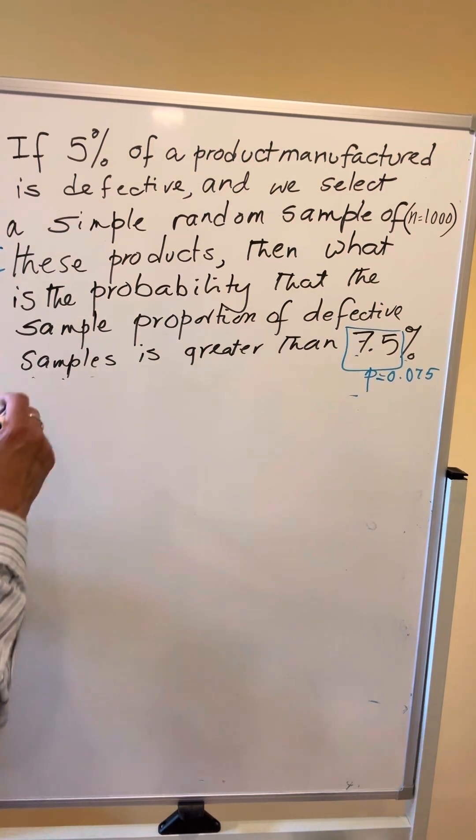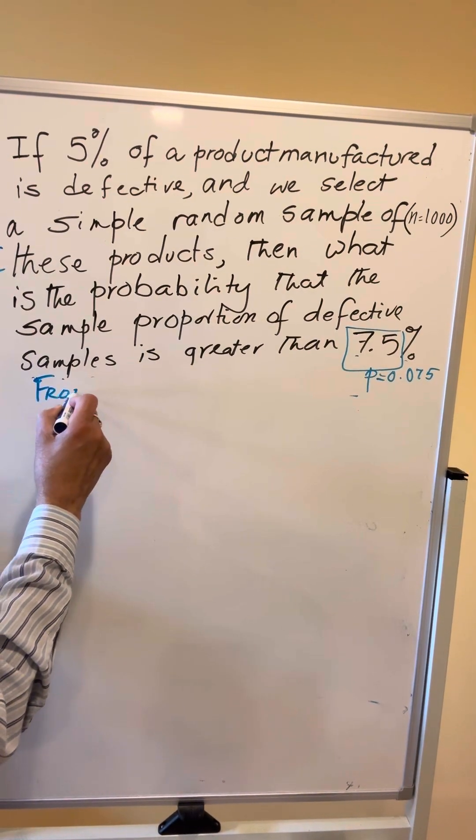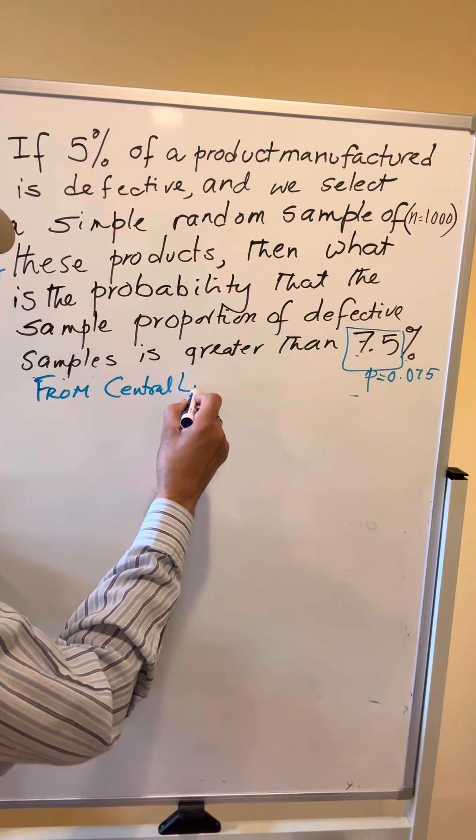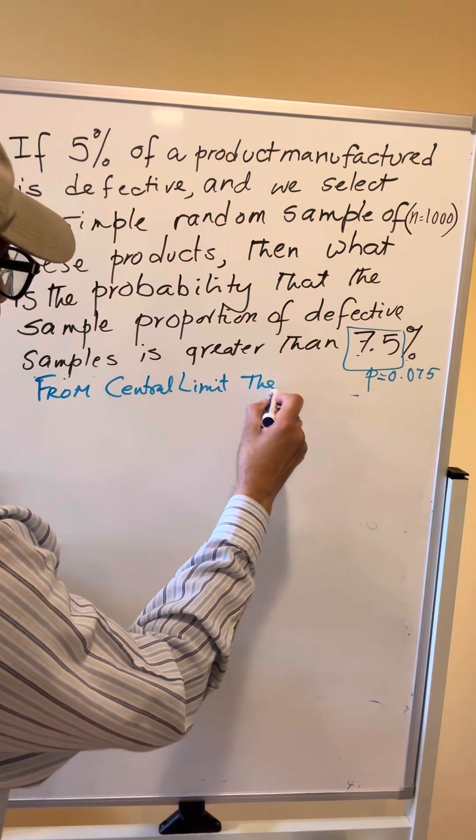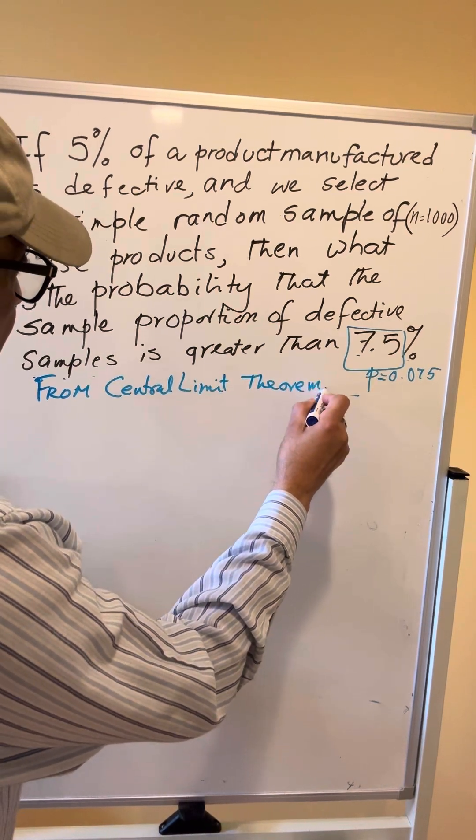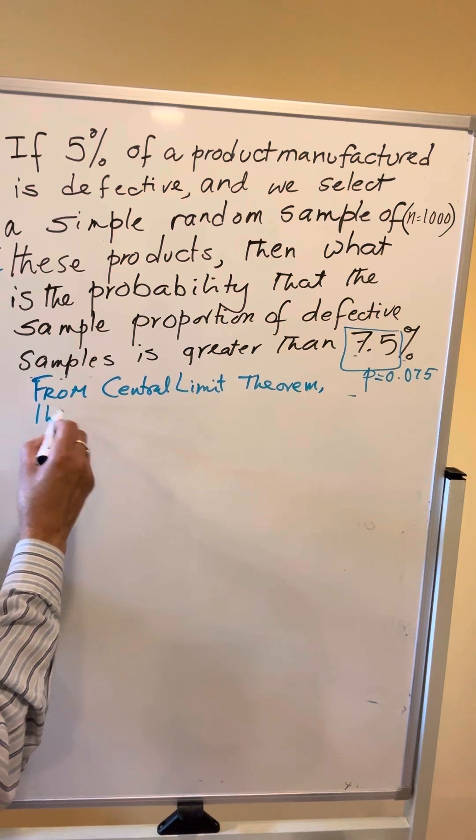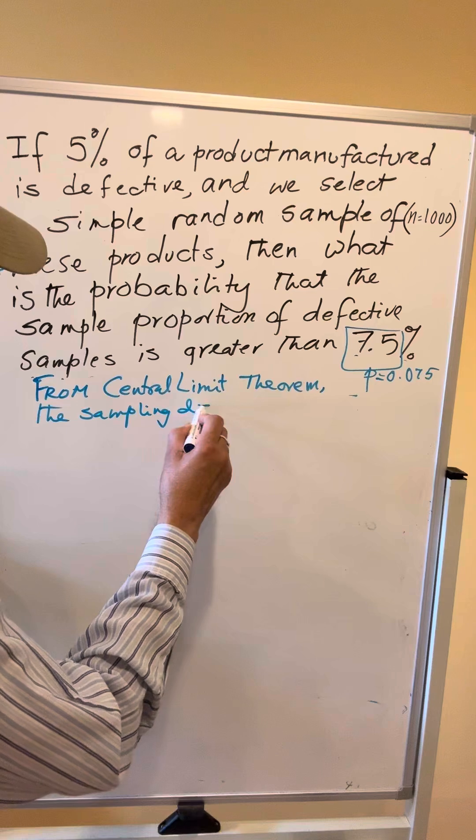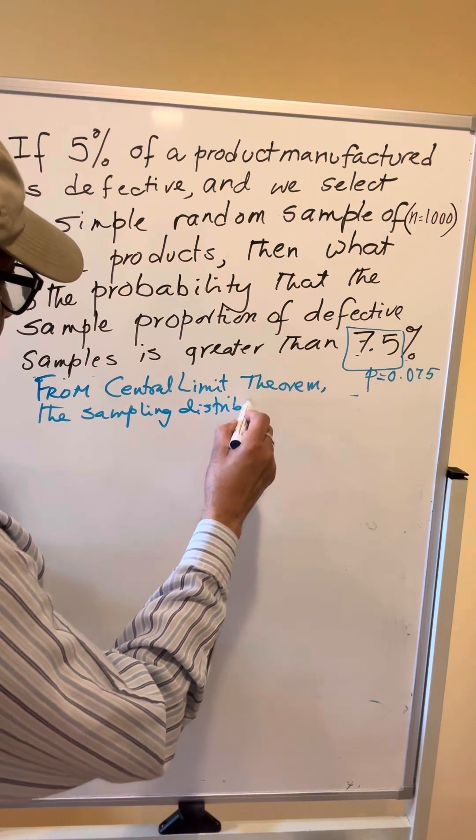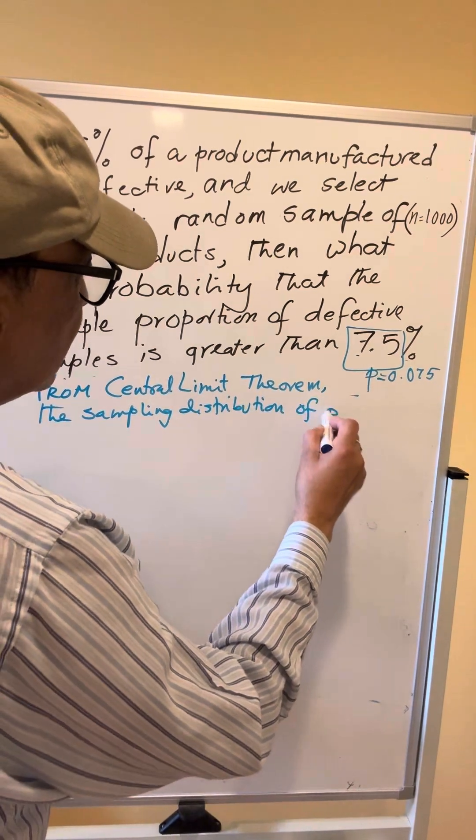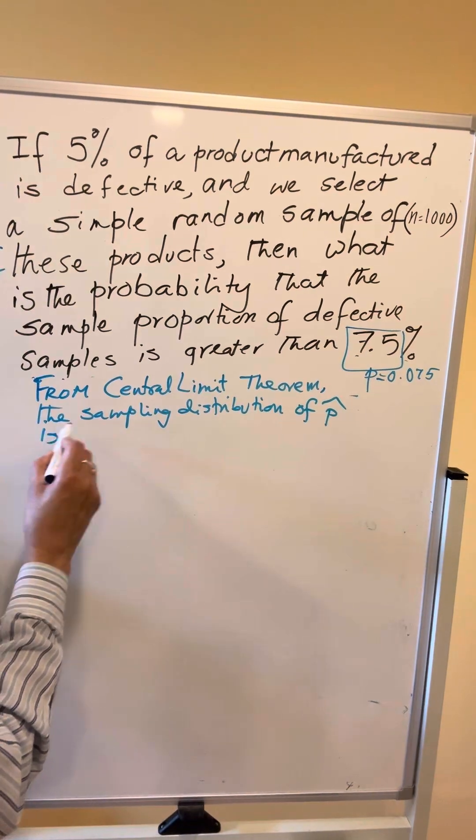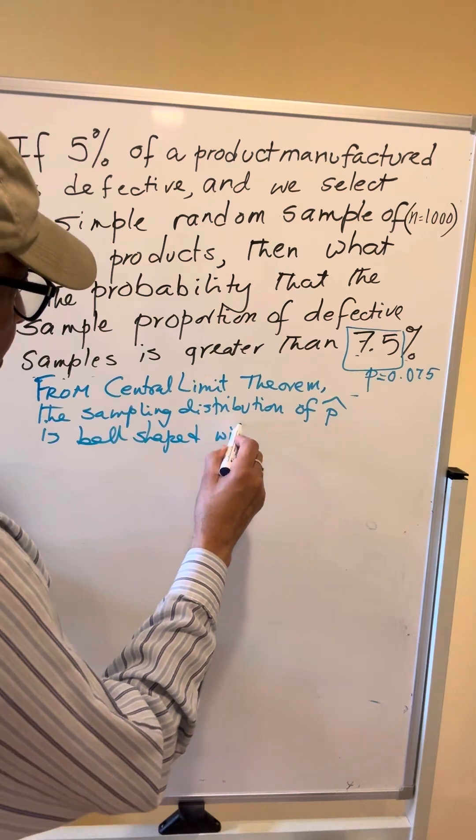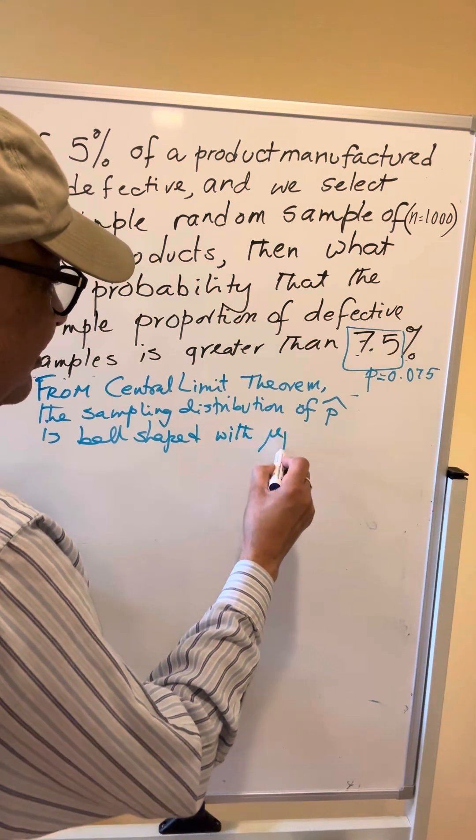Now from Central Limit Theorem, the sampling distribution of P-hat is well-shaped. Distribution of P-hat is well-shaped with Mu P-hat, that is the center equal to P, in this case equal to 5%, which in decimal is 0.05.